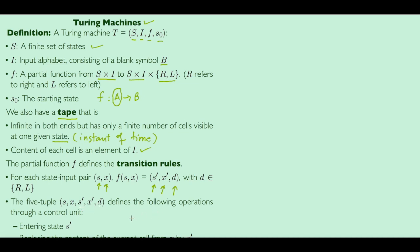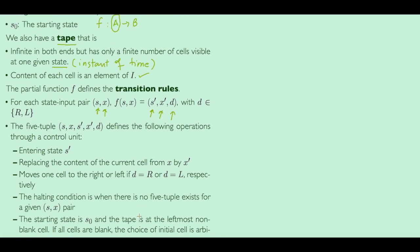When we have this five-tuple, it means we enter state S', then we replace the content of the current cell from X by X'. Then we move one cell to the right if D equals R, or move left if D equals L.